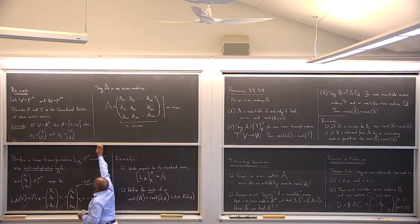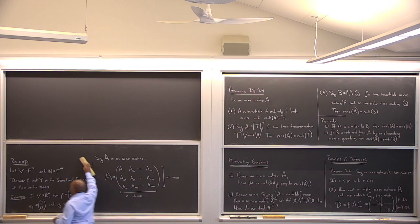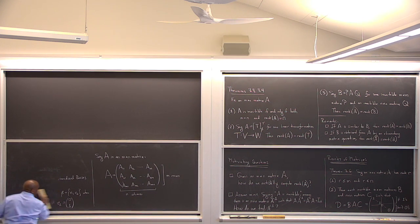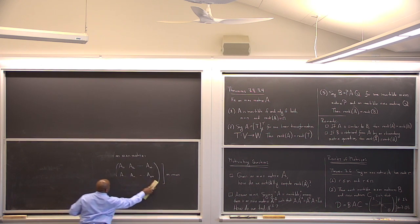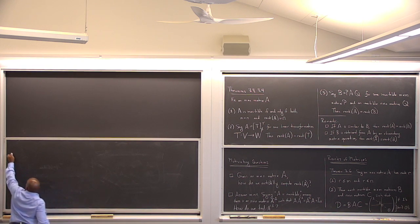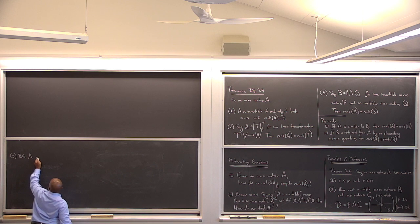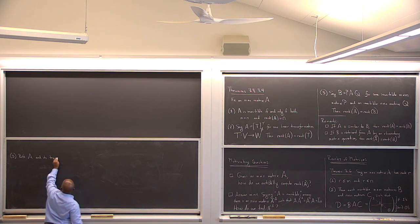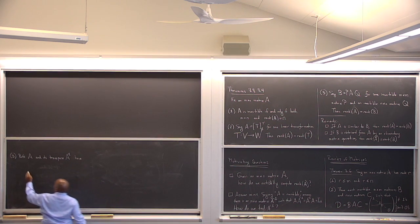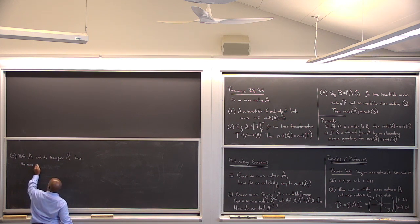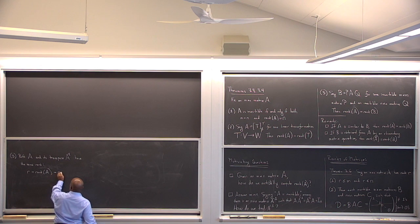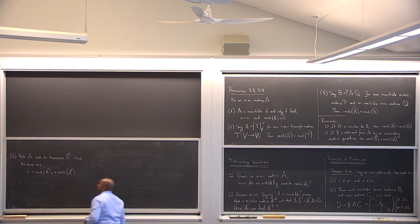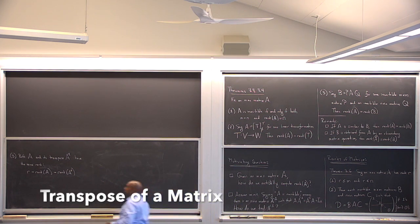There's a third result that we're going to use quite a bit: both A and its transpose A^T have the same rank. What I mean is that if r is the rank of A, it is also the rank of A transpose. The transpose means we swap the i,j entry of A to become the j,i entry of A^T — that is, rows and columns are interchanged.